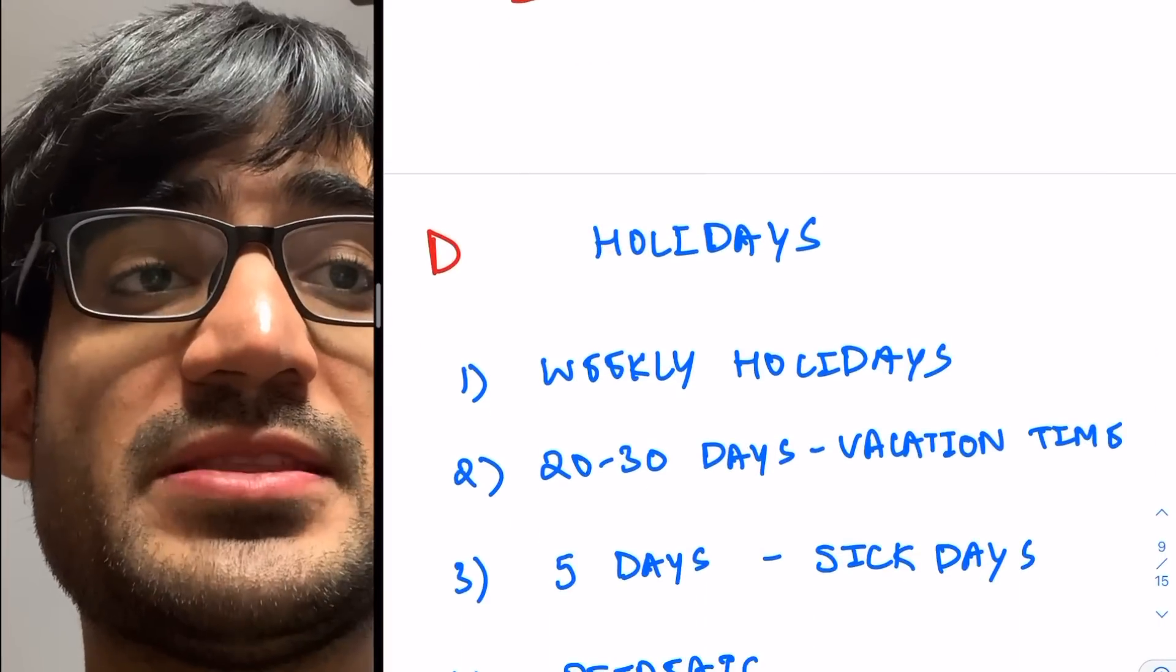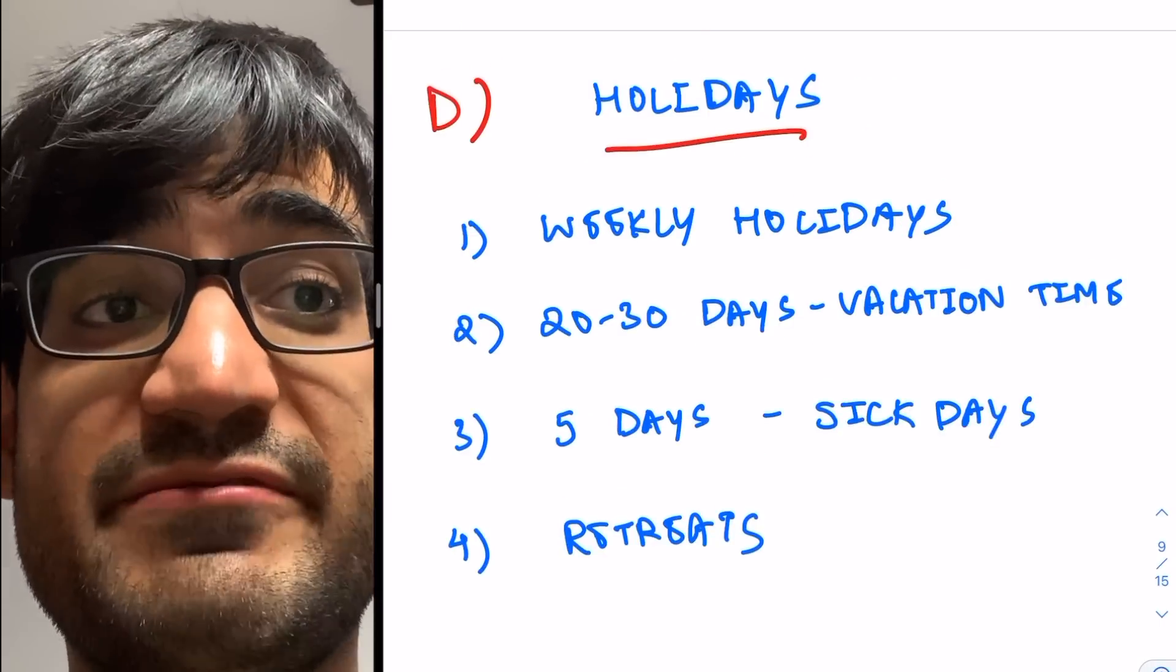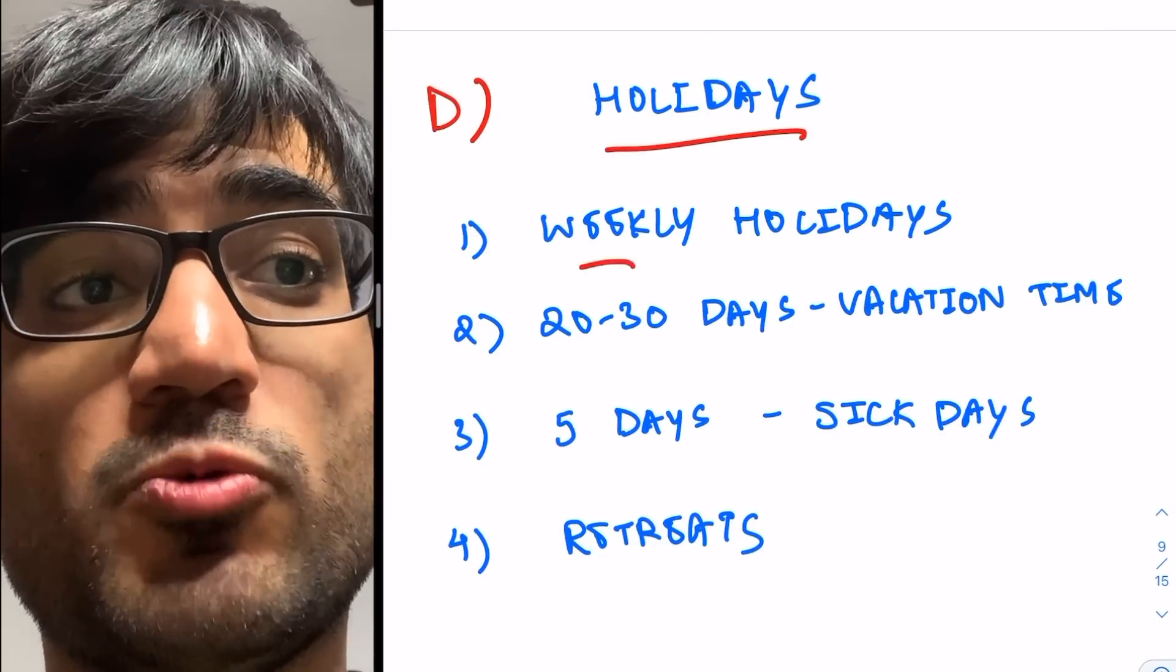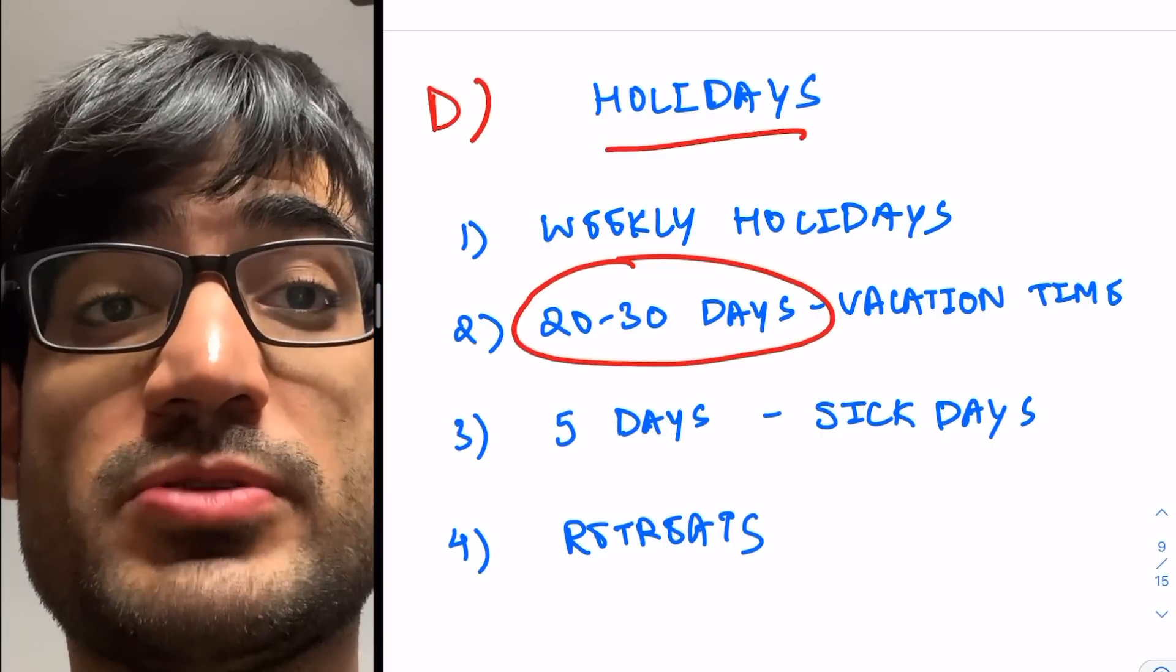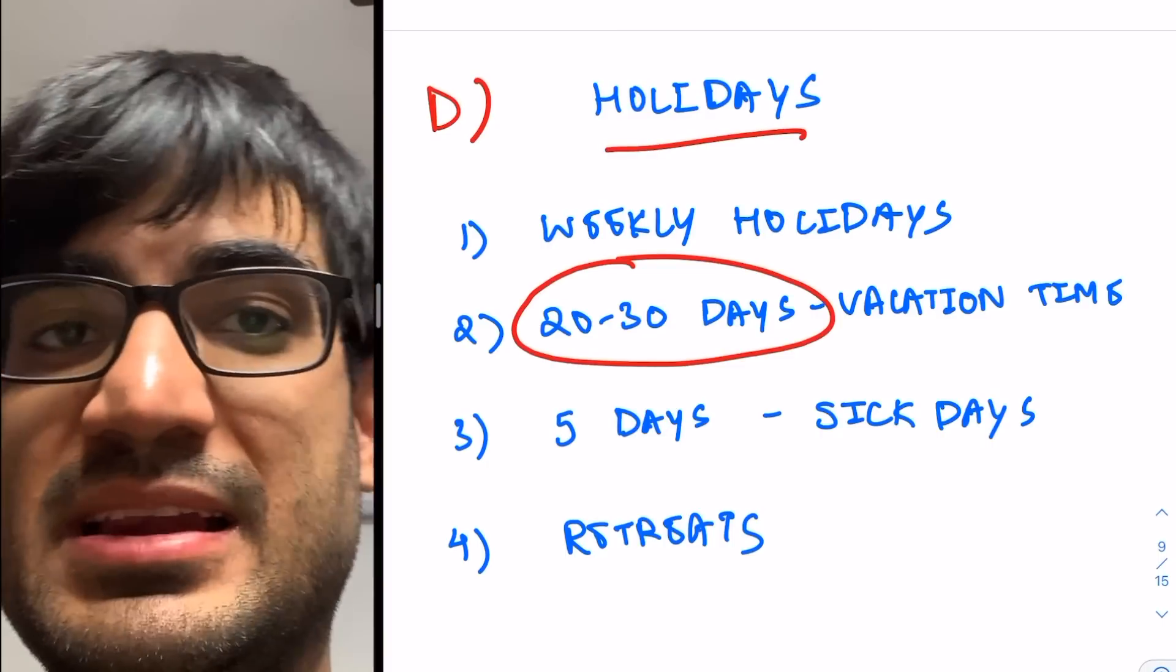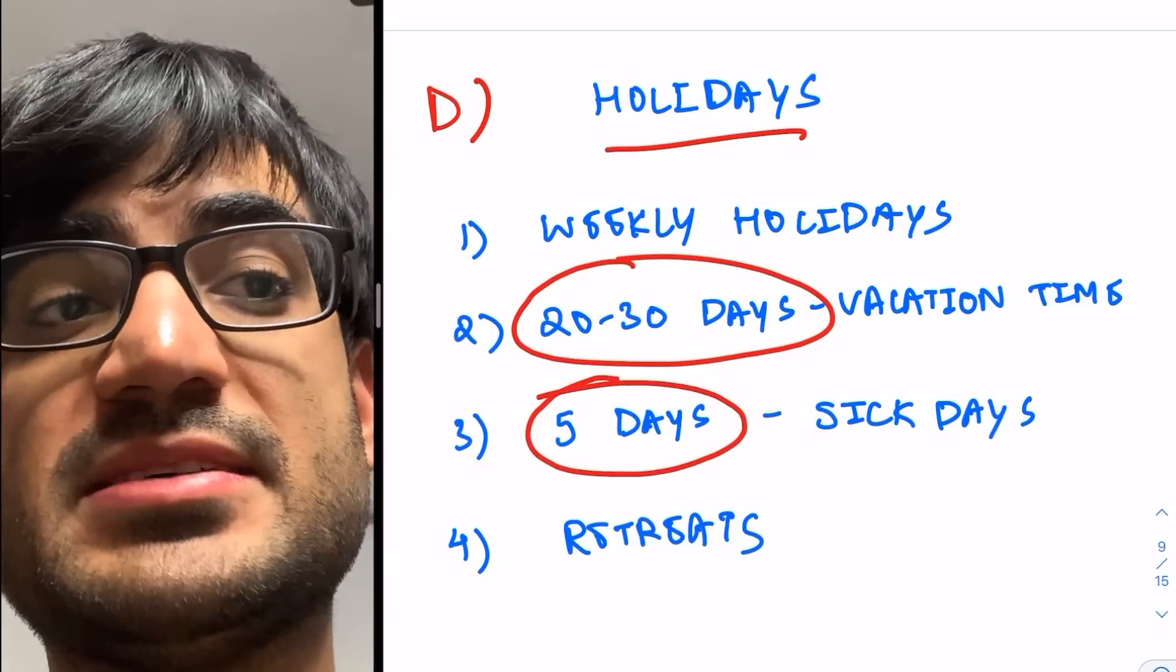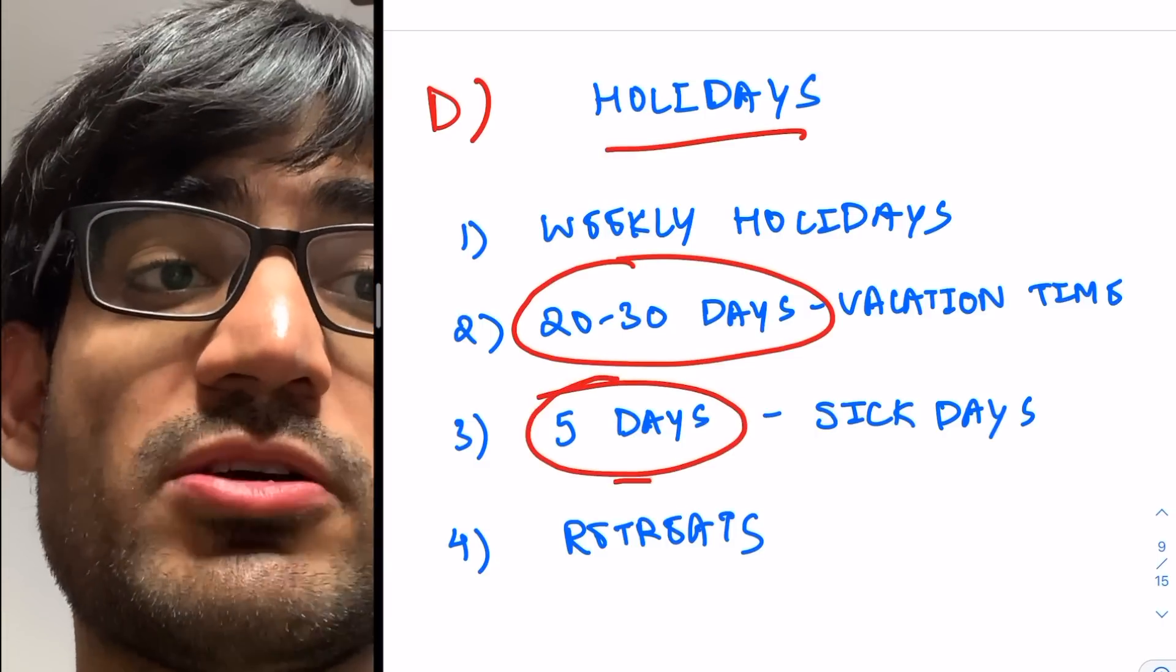So after we're done with that, let's now talk about holidays. So normally, you get weekly holidays, one holiday per week. You get about 20 to 30 days vacation time, which is paid vacation time. Remember that. So you can take a break for a month. That can happen. You also get up to five days sick days if you fall sick. And again, there are retreats. So you get holidays for that.